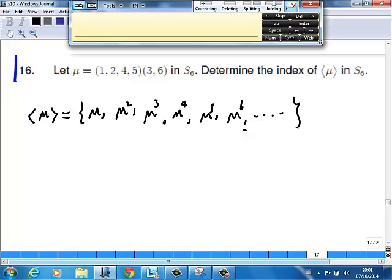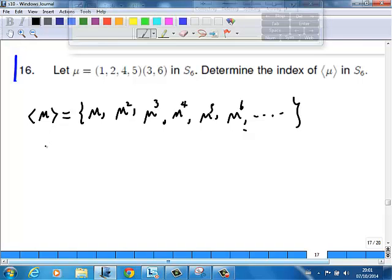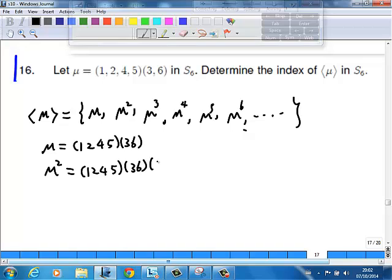So let's look at μ here. μ is, let's do a computation, although it's not necessary, but it's good to do a bit of computation. So μ is (1,2,4,5)(3,6). But it's μ². (1,2,4,5)(3,6) multiplied by (1,2,4,5)(3,6). Right? μ² is this.